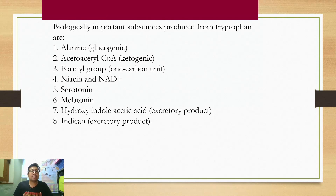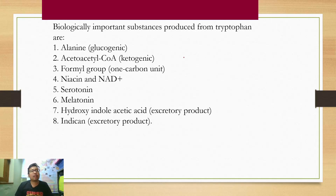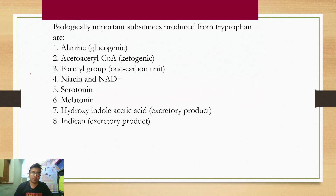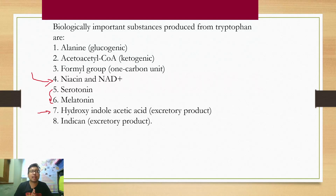There will be an exhaustive list of products from tryptophan in your textbook, but you do not need to know each and everything. For the bare minimum, the thing that will easily make you pass: number one, one important product synthesized from tryptophan is niacin — one vitamin. Two neurotransmitters synthesized from tryptophan are serotonin and melatonin, and one excretory product is hydroxyindole acetic acid.